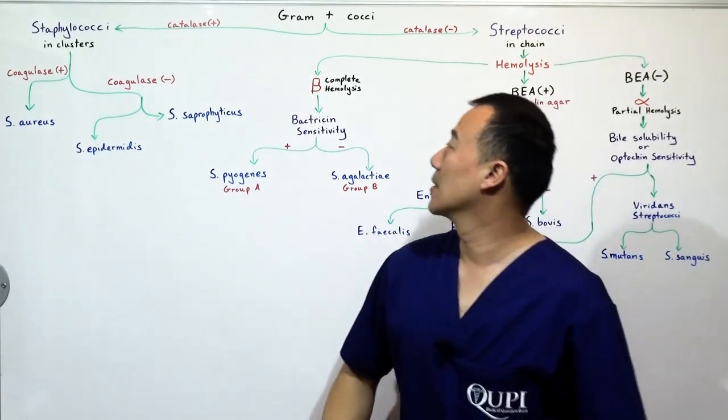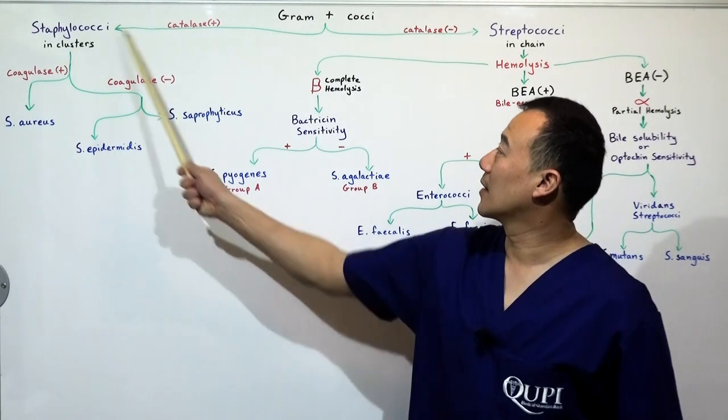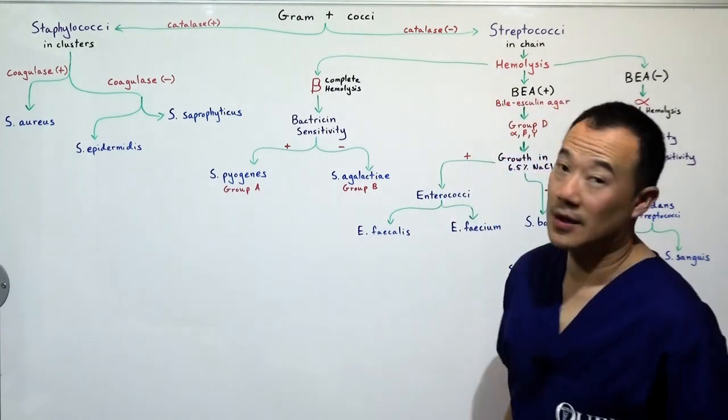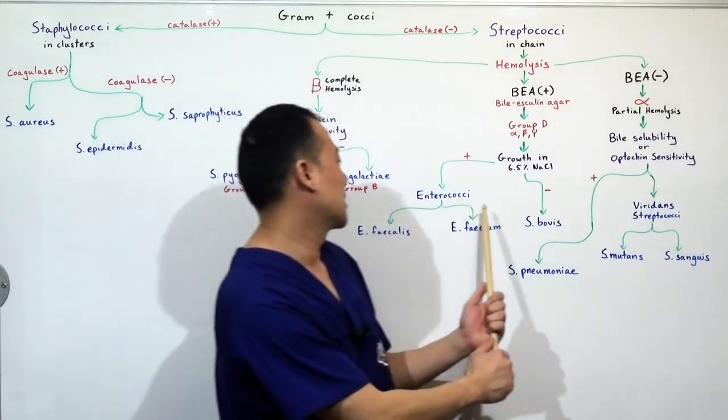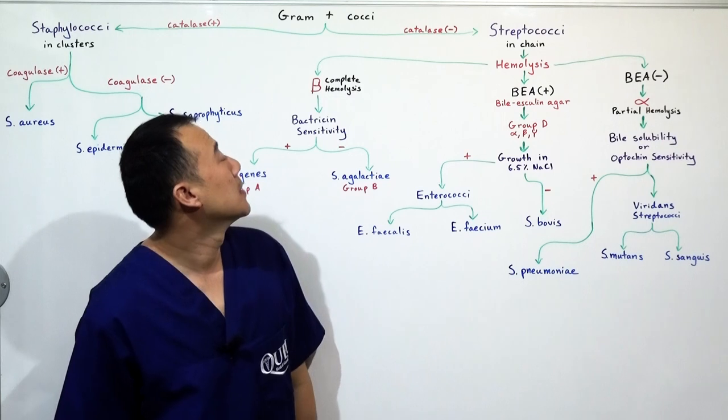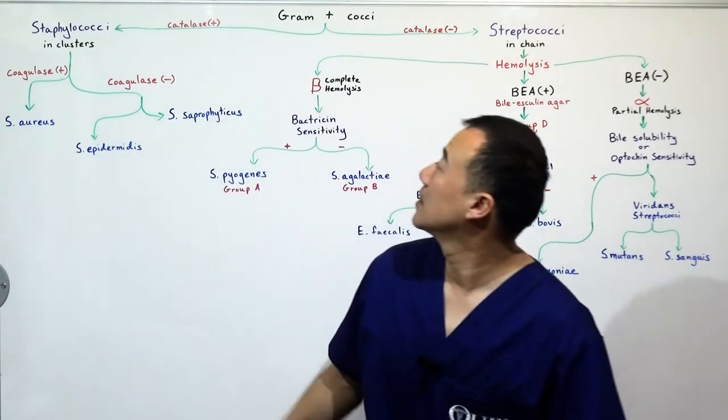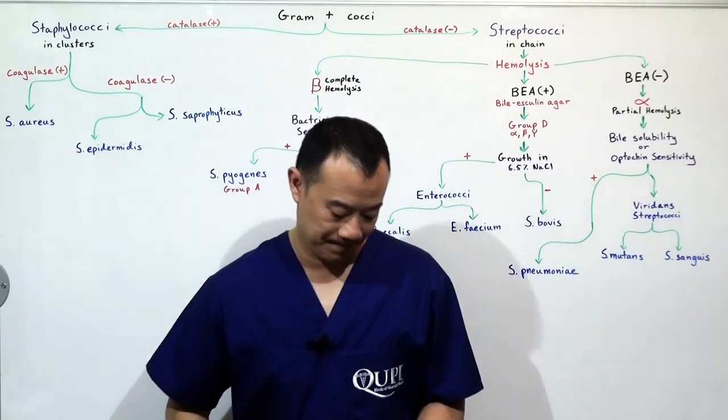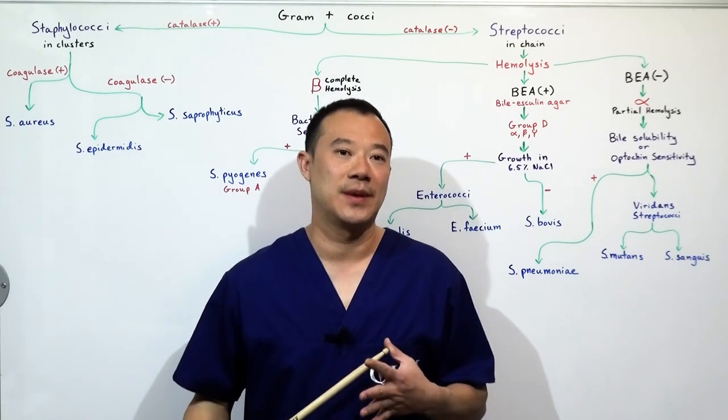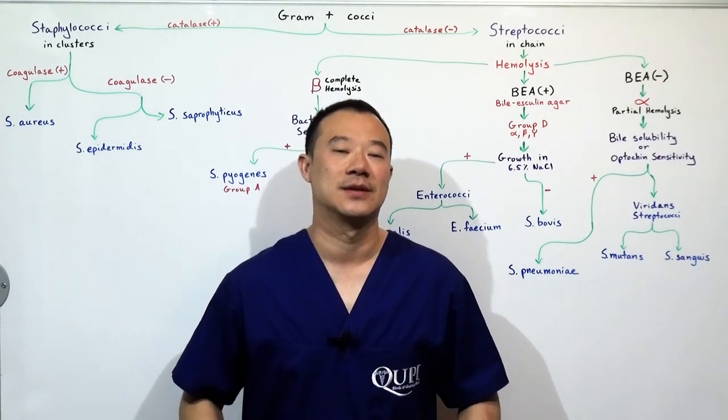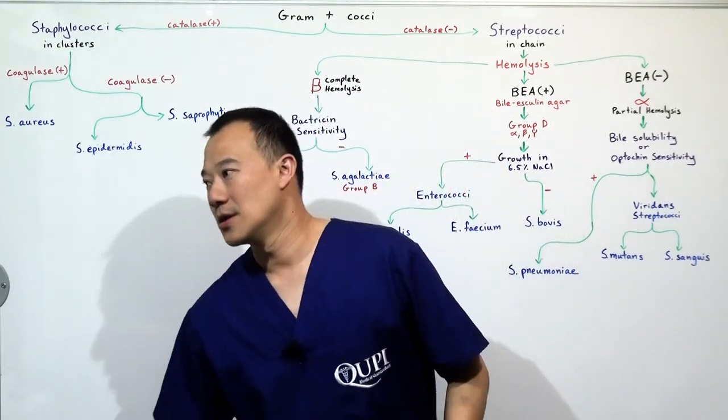Gram positive cocci. We've got Staphylococci, we've got Streptococci, and we've got Enterococci. How are we going to figure out which bacteria is which based off of lab tests? This is the mind map or the flowchart to figure that out. Let's start with this.